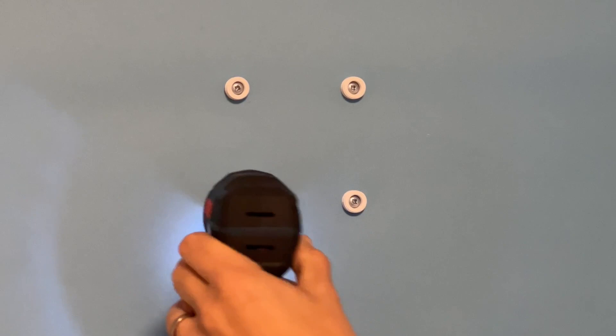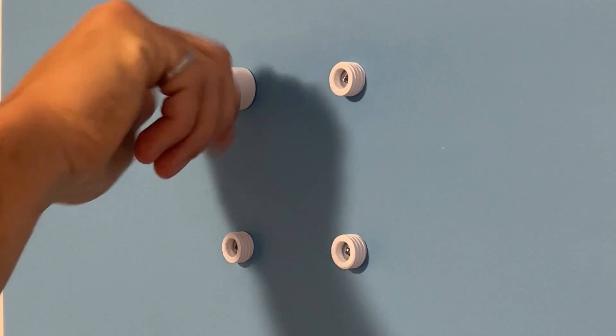Screw the wall anchors into the wall using whatever method you want, and then the wall posts screw onto those anchors.